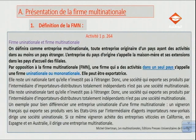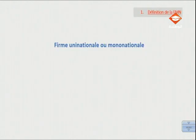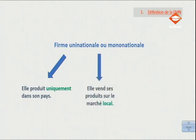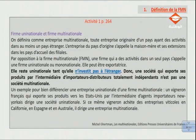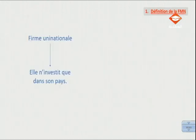Une firme uninationale ou mononationale peut être exportatrice. D'après ce texte, c'est une firme qui produit uniquement dans son pays, qui vend ses produits sur le marché local et qui éventuellement exporte. Pour le dire autrement, une firme reste uninationale tant qu'elle n'investit pas à l'étranger, c'est-à-dire tant qu'elle n'investit que dans son pays.